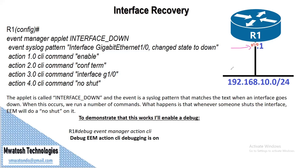For example, we have interface G1/0. We want to configure an applet on this router so that if someone shuts down this interface — either intentionally or accidentally — the interface will shut down but after a few seconds it will come back up automatically.